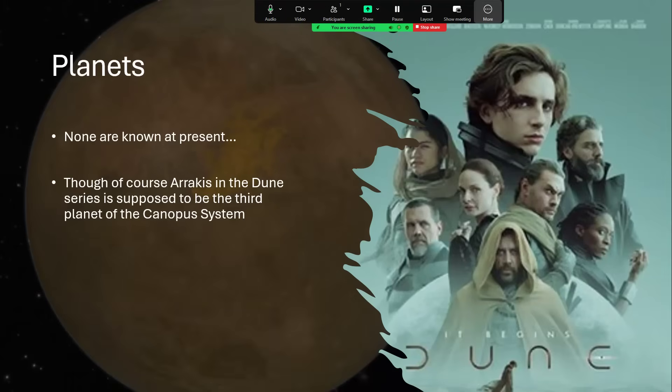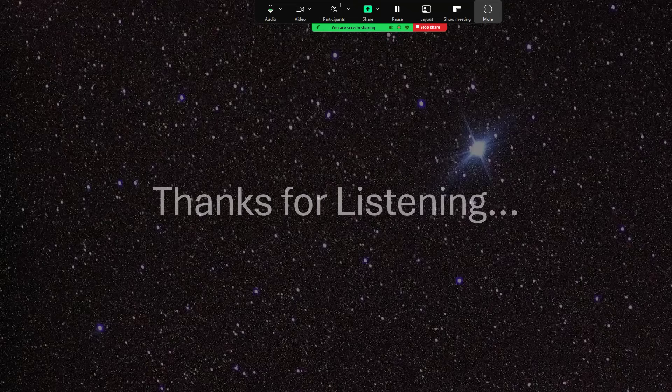Arrakis is supposed to be the third planet of the Canopus system. And so it just seems to turn up all over different sci-fi, but perhaps most famously in this case here. So I think that's a good place to end. And thank you very much for listening. That was Once Around Canopus.